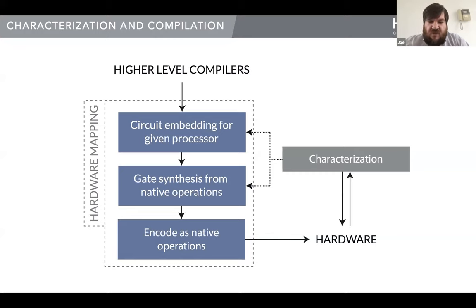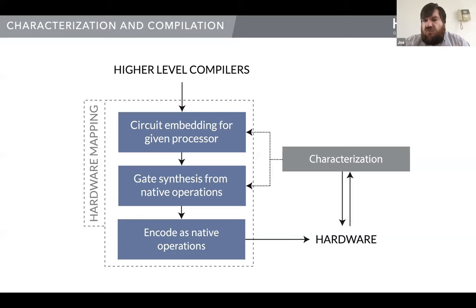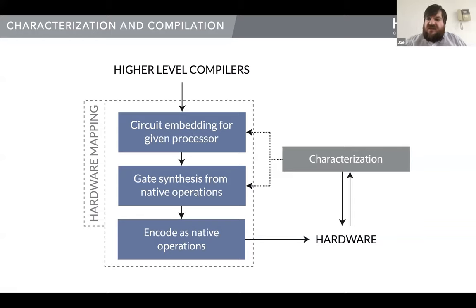If you know what the gate does rather than what it's supposed to do, you can compile to get a better outcome. A lot of the time, the noise in the systems is non-Markovian and can be canceled — through decoupling or by calibrating the system differently to account for broadening in the spectrum. The reason we do characterization is to feed it back into the lower levels of our compiler so that when we embed a circuit in a processor, we can account for gate quality — not all CZs or CNOTs are created equal.